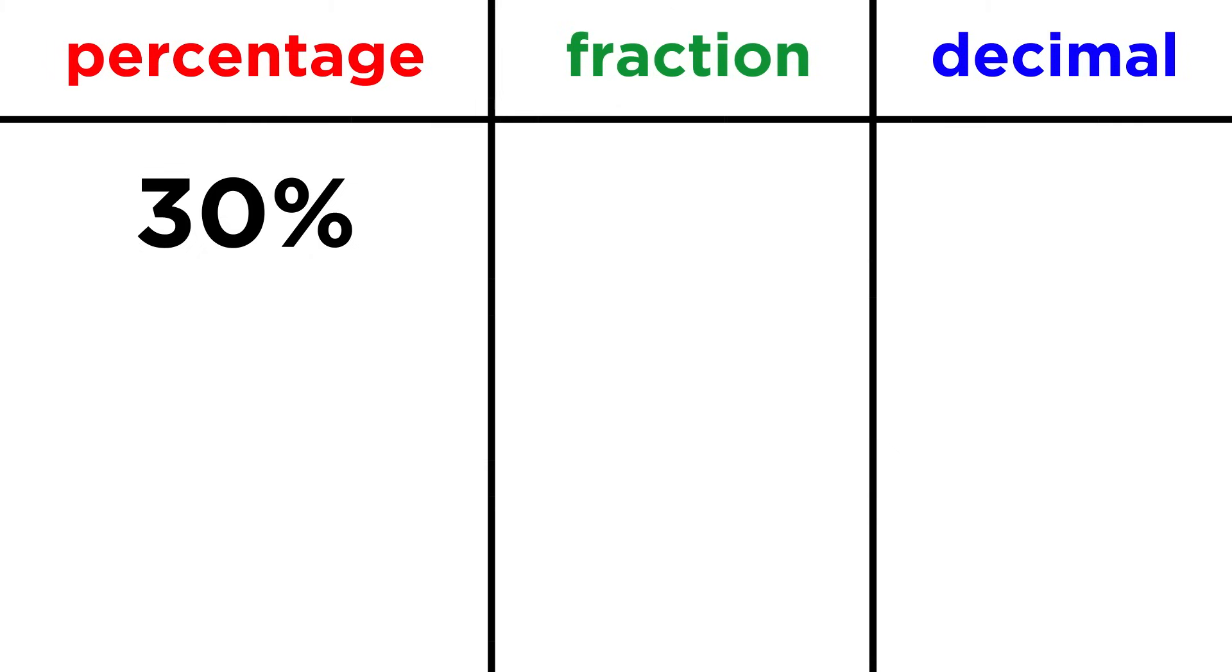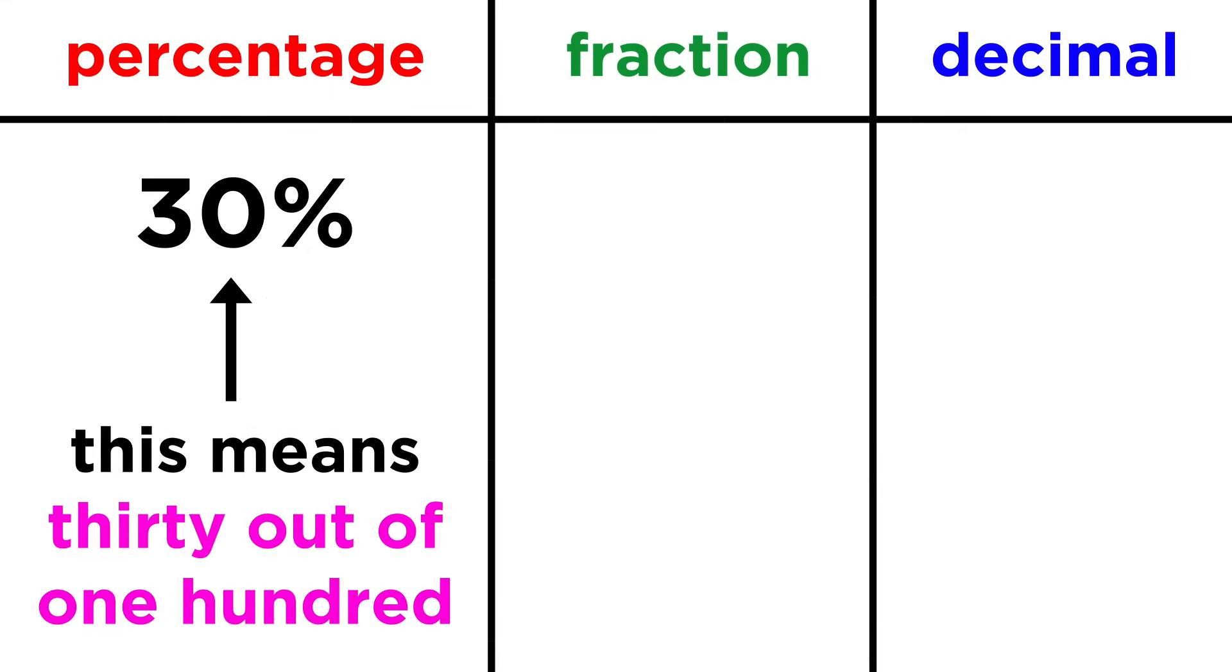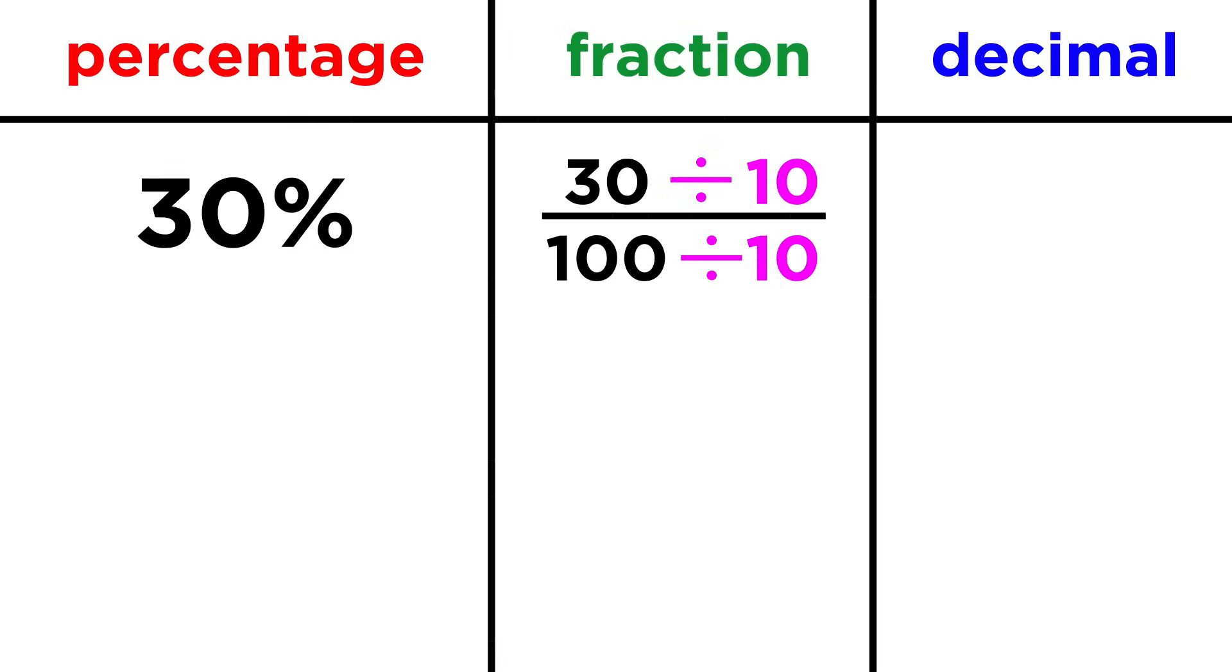Let's take something like thirty percent. It's very easy to convert this to a fraction, because we know that percentages are out of a hundred, so thirty percent becomes thirty one hundredths, or thirty out of a hundred. Then to reduce the fraction, we can divide both numbers by ten, and here's a hot tip. When we do this, we can just cross out the zero in each number, as that will do the same thing as dividing by ten. That leaves us with three tenths. So thirty percent is equivalent to three tenths.